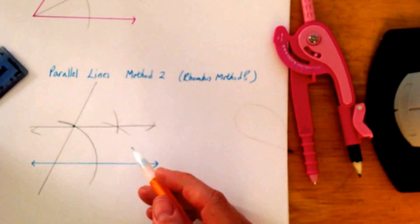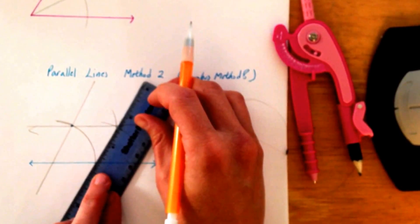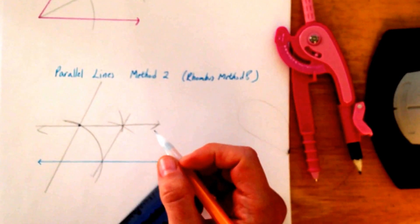Later on, what you'll see, what you've also done, is created a rhombus. If you connect all the points, that shape there is a rhombus. Now,